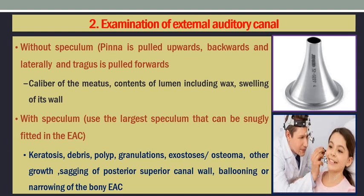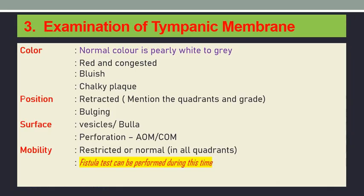This is the speculum, and this is being examined with the speculum. Examination of the tympanic membrane is carried out after that. Using the speculum or an otoscope, you have to see the color — normally the tympanic membrane is pearly white to grey. Sometimes it may be red and congested, bluish, or chalky white when there is a tympanosclerotic patch. The position may be retracted or bulging. When there is retraction, note the quadrants and the different grades of retraction — there are four different grades for pars tensa as well as pars flaccida.